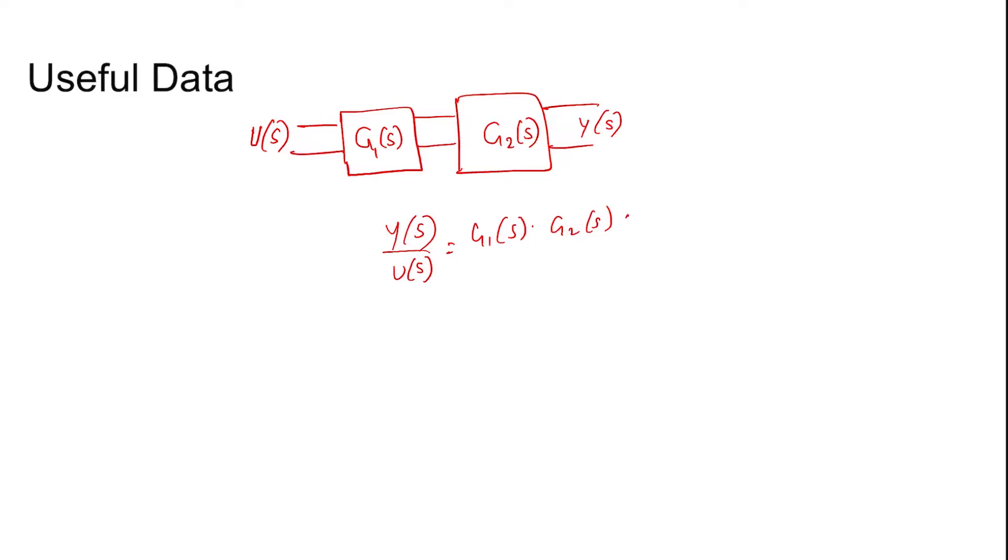That means it is cascaded, and the overall transfer function G(s) is G1(s) into G2(s). This is equal to G(s) where the same inputs U(s) and output Y(s). If you know this, now it will be easy for you.